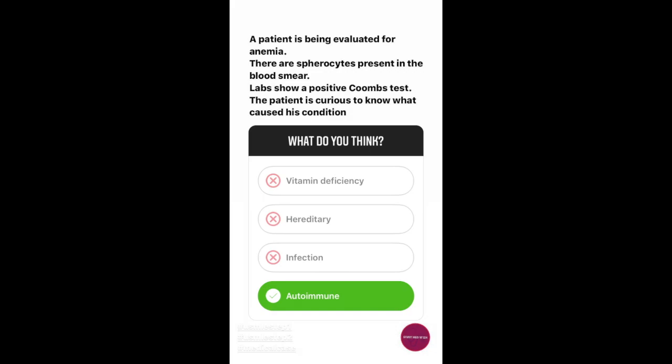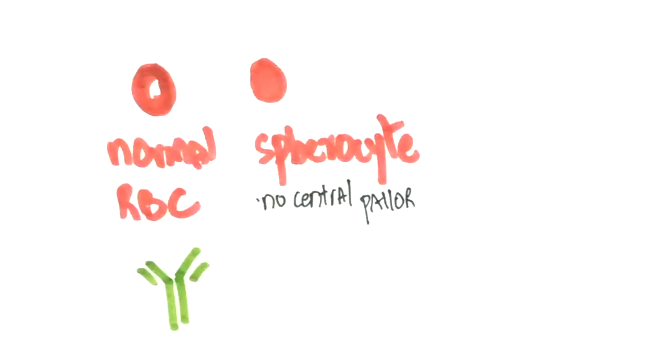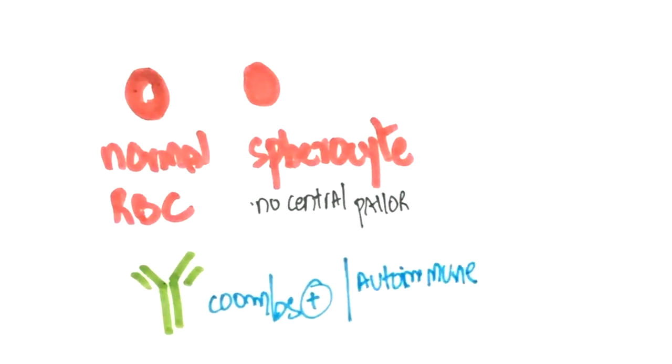The diagnosis is autoimmune hemolytic anemia. This is seen when antibodies are formed against red blood cells. Since antibodies are involved, the Coombs test is positive. Spherocytes are also seen in hereditary spherocytosis but in such cases, Coombs test will be negative.